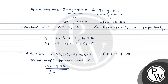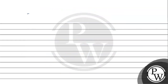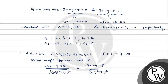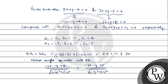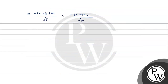Therefore, the obtuse angle bisector is: (-2x - y + 4) / √((-2)² + (-1)²) = (-3x - y + 5) / √((-3)² + (-1)²). Simplifying: (-2x - y + 4) / √(4 + 1) = (-3x - y + 5) / √(9 + 1), that is (-2x - y + 4) / √5 = (-3x - y + 5) / √10. Now √10 can be written as √5 × √2, so the √5 terms cancel out, leaving √2 on the right side.